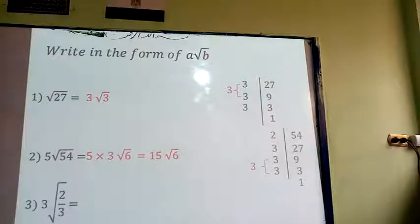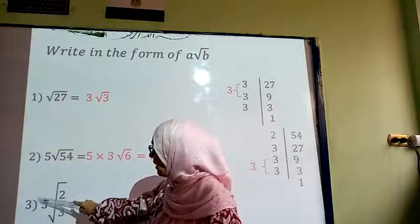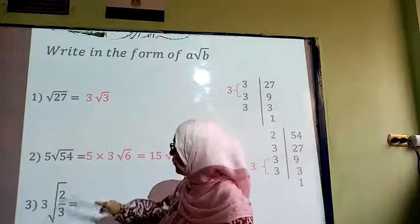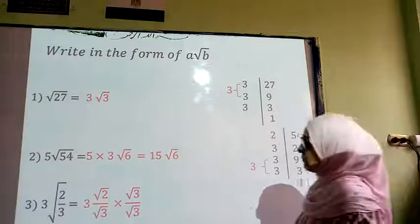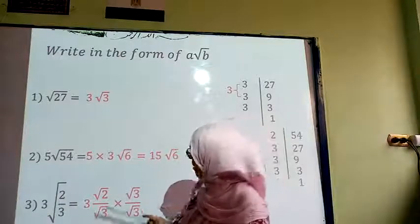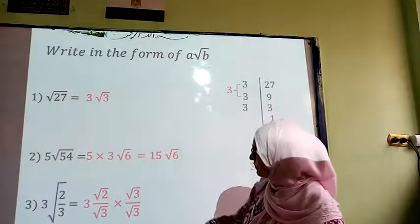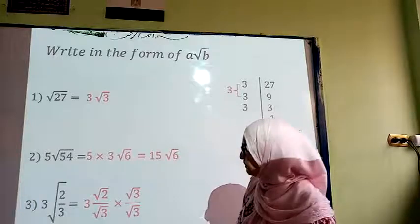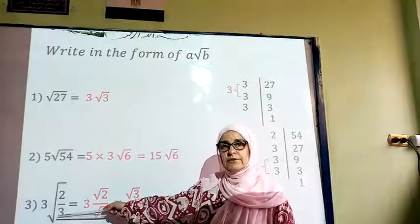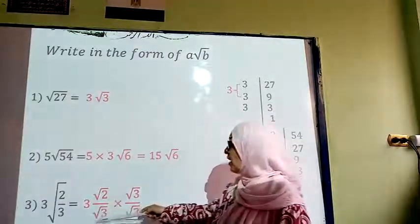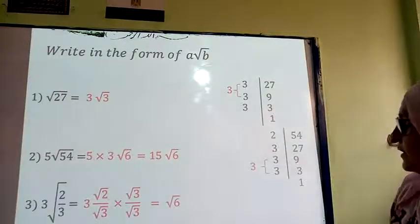Another example: in this example we can move the string which is outside the root to inside the root, or we can multiply both of them by root 3 up and down. Why? To remove this root, because it is not accepted to have the root in the denominator. We will end up with root 6.